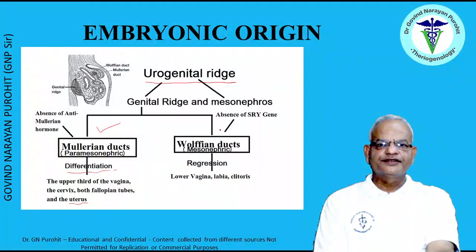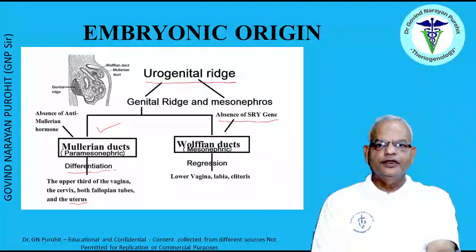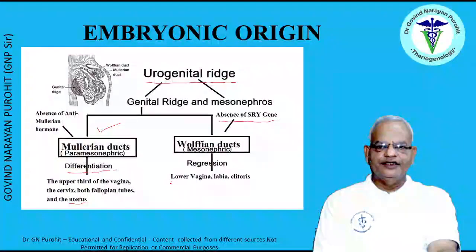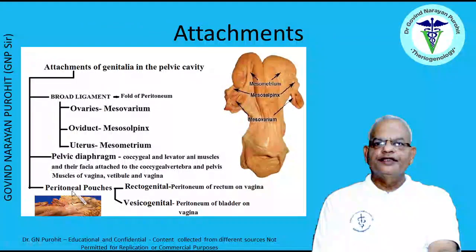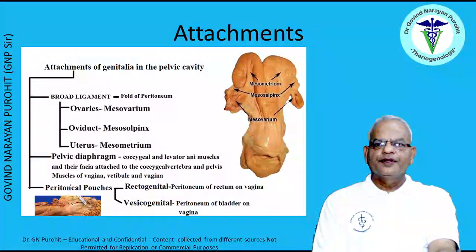The Wolffian ducts in the female, since there is absence of the SRY gene and the Y chromosome, the mesonephric ducts regress. However, parts of them and the urogenital sinus form the lower vagina, labia, and clitoris.